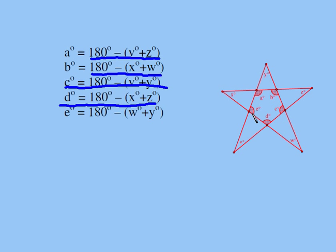Angle e, angle y, and angle w are the three angles of a triangle. So angle e has to be 180 minus w plus y. We have this nice relationship from what we know.